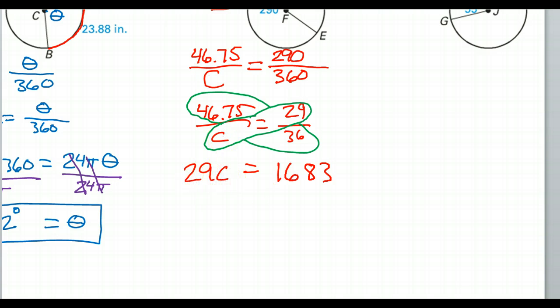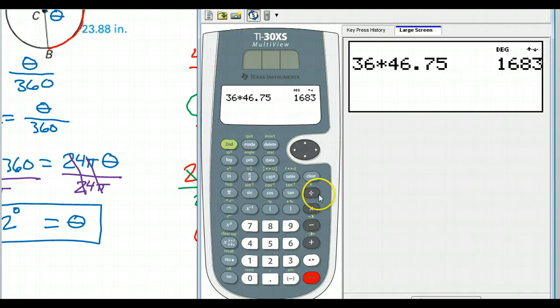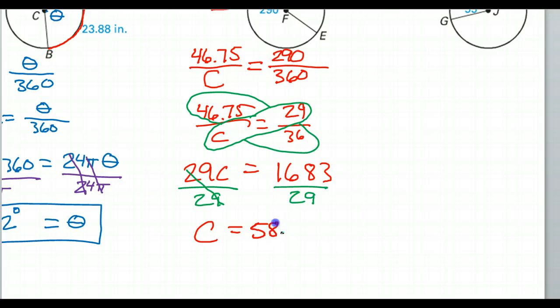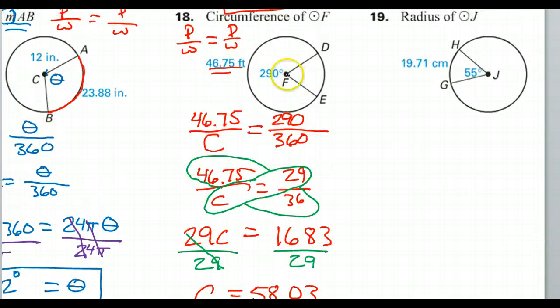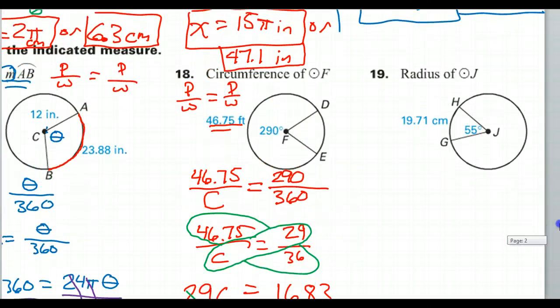Let's go ahead and divide both sides by 29. Divided by 29. Back to the calculator. I'll just hit divided by 29. So that is 58.03. And I should include the units here, which are feet. So we are supposed to find the circumference, and we did it. Okay, so that is how you do number 18.